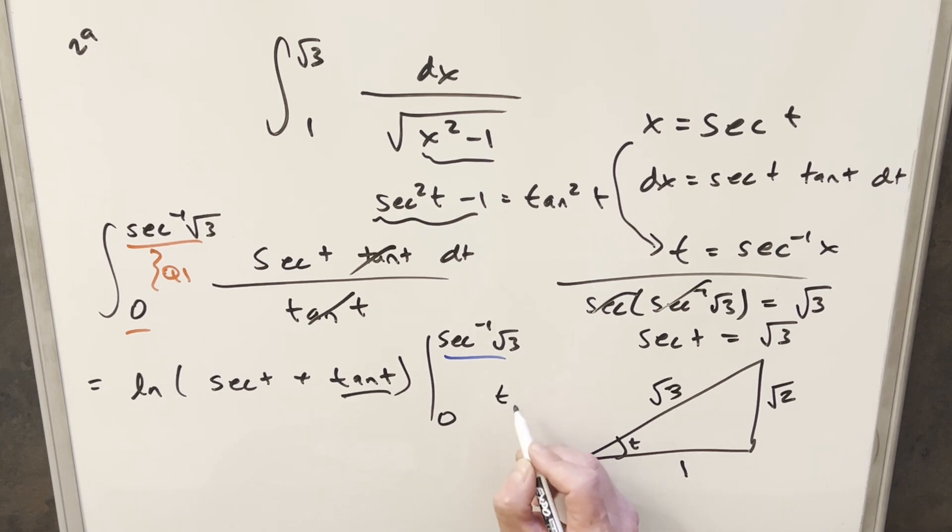So with this triangle, we can find our value for tan of t, because it's just opposite over adjacent, and so that's just going to be square root of 2. And now we have everything we need, because we get our secant t value, and we have our tan t value, and so we can just plug it in and finish it off.